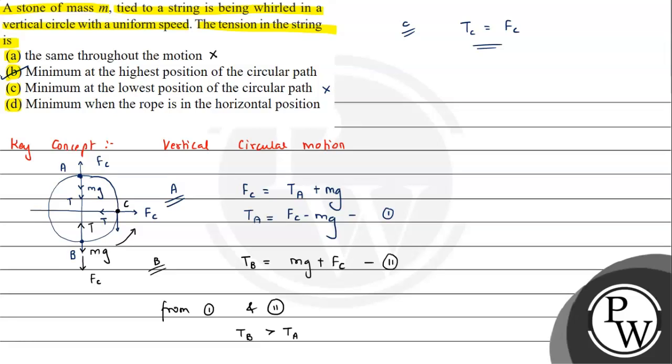Option D says minimum when the rope is in the horizontal position. At horizontal position C, we can see it is not minimum, so this can also be discarded. B is the correct answer for this question. I hope you understood the solution. All the best.